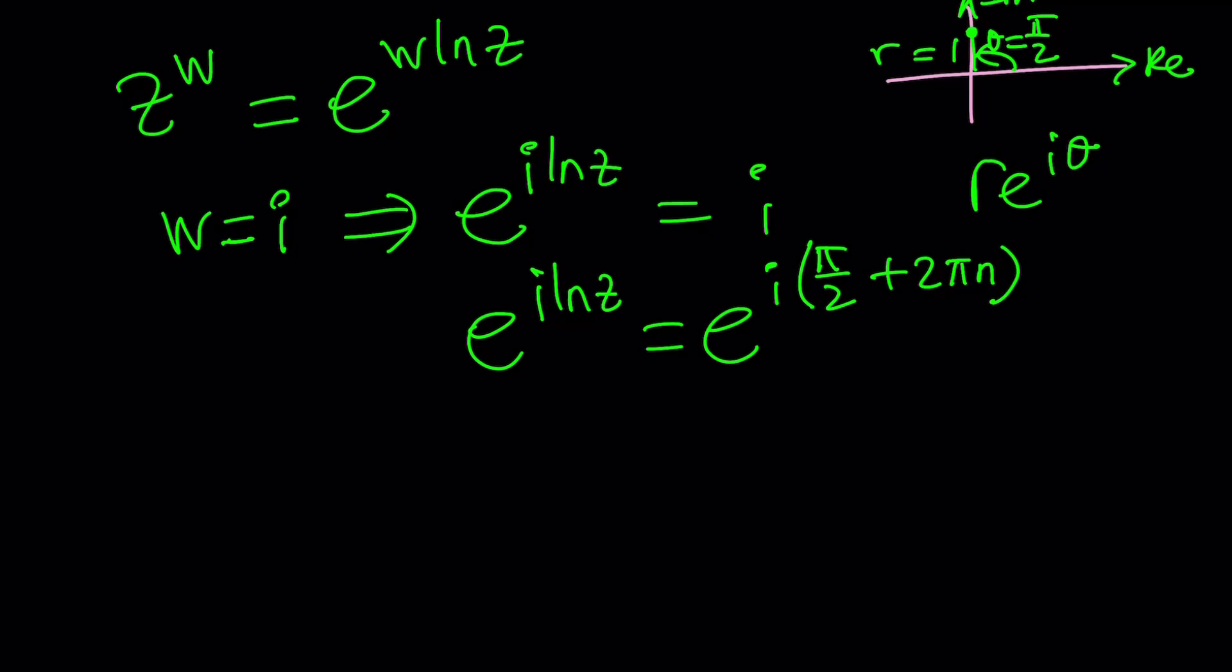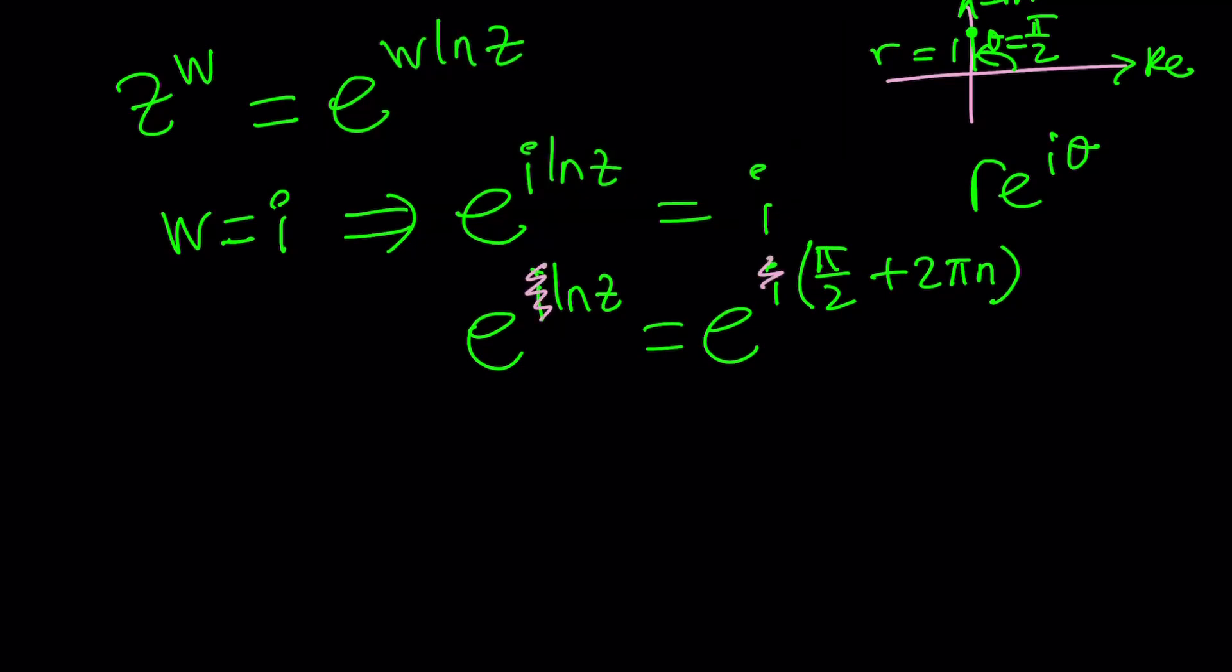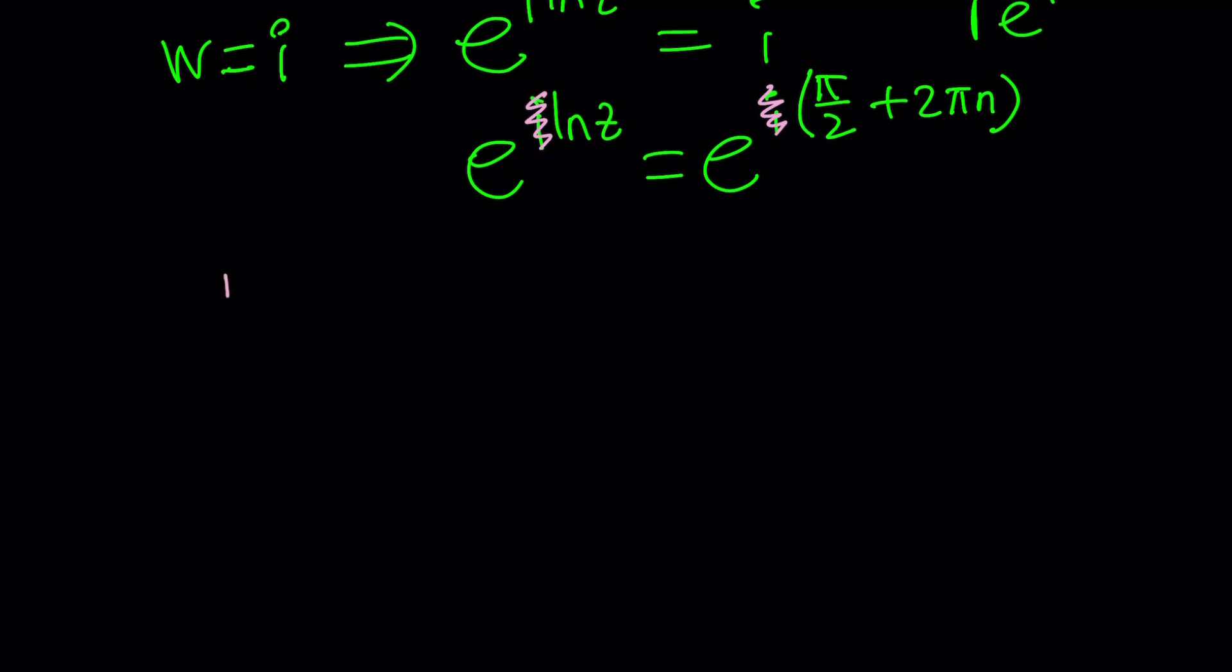What is really cool about it is that we can get rid of the i's. Just cancel them out. Easy, right? Because they both have i in them. From here, we get ln z equals π over 2 plus 2πn, where n is an integer. And if you natural log both sides, then you should get this. If e to the power z sub one equals e to the power z sub two, does this not imply that z sub one equals z sub two? It should.